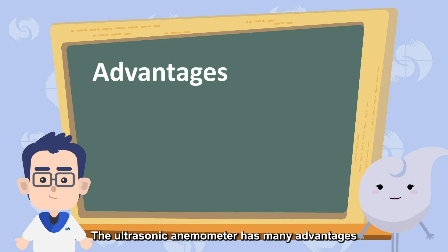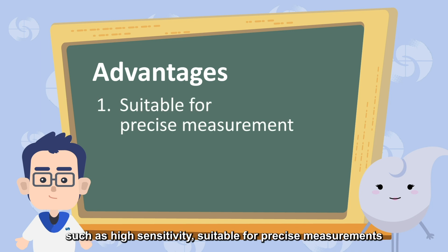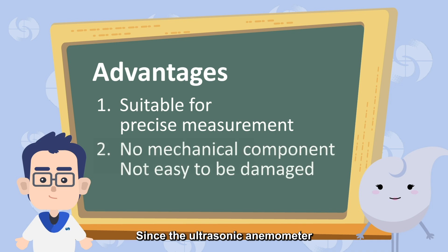The ultrasonic anemometer has many advantages, such as high sensitivity, suitable for precise measurements. In addition, when the wind direction changes drastically, it may cause damages to the mechanical components of the cup anemometer. Since the ultrasonic anemometer has no mechanical components, it is less likely to be damaged or worn.